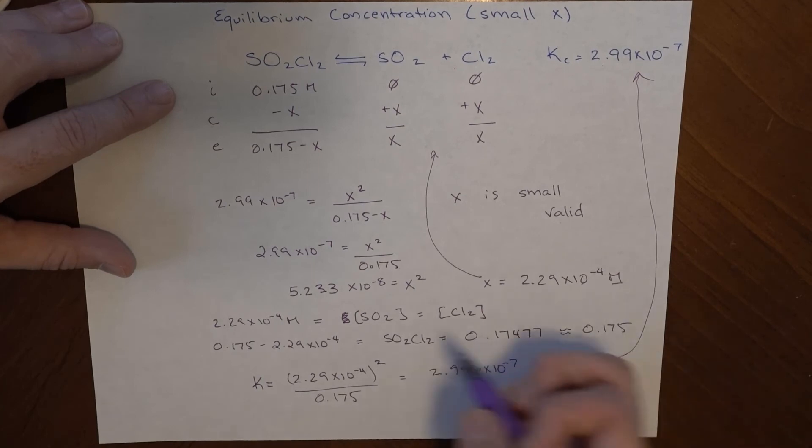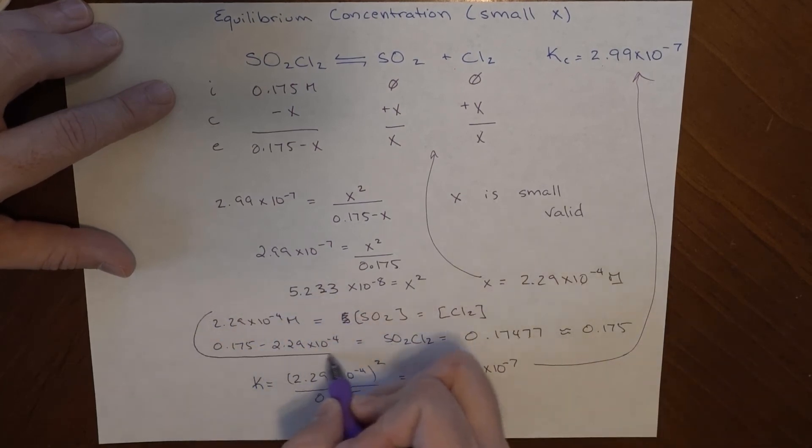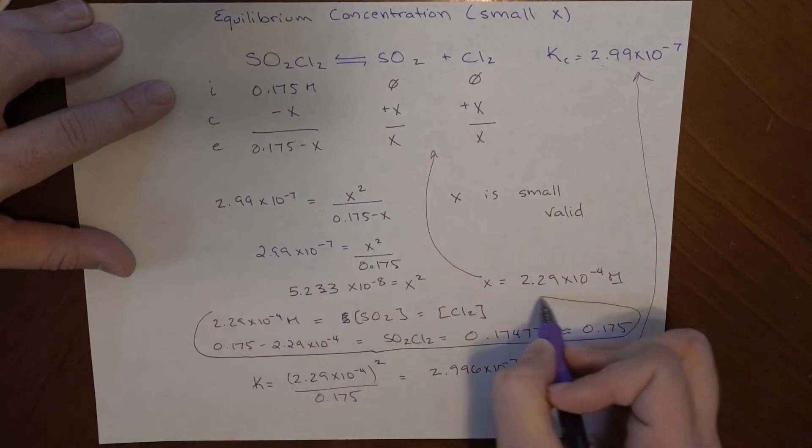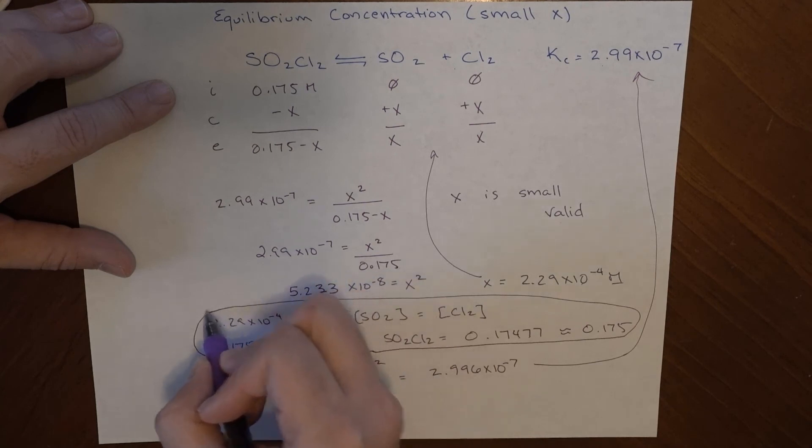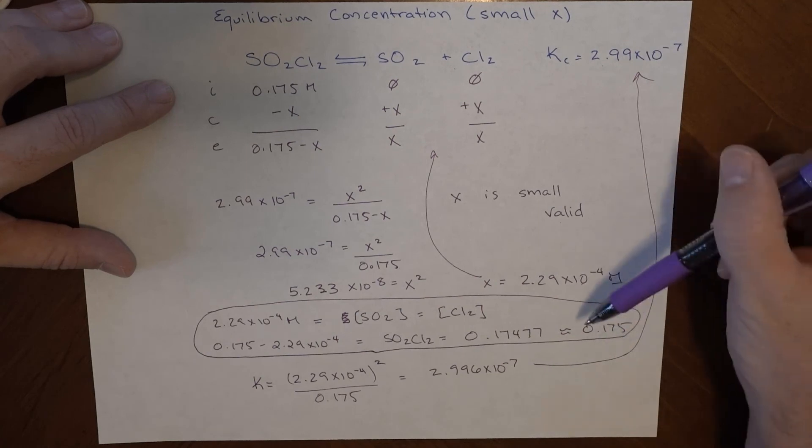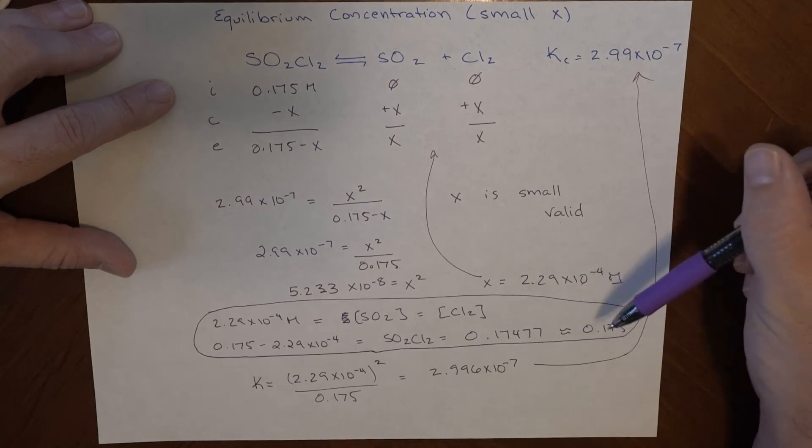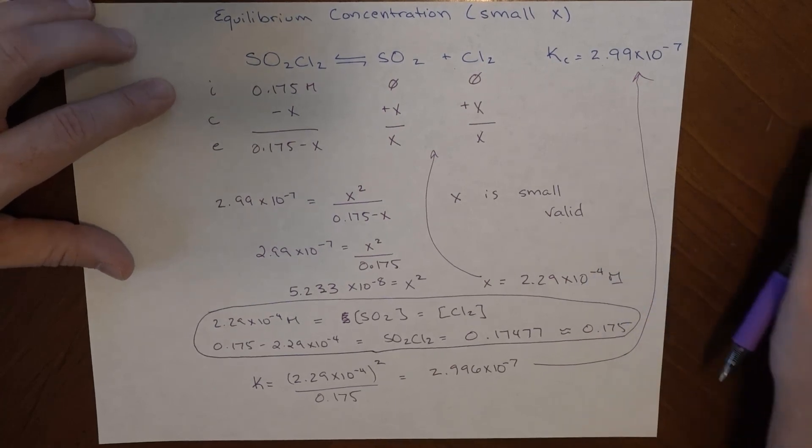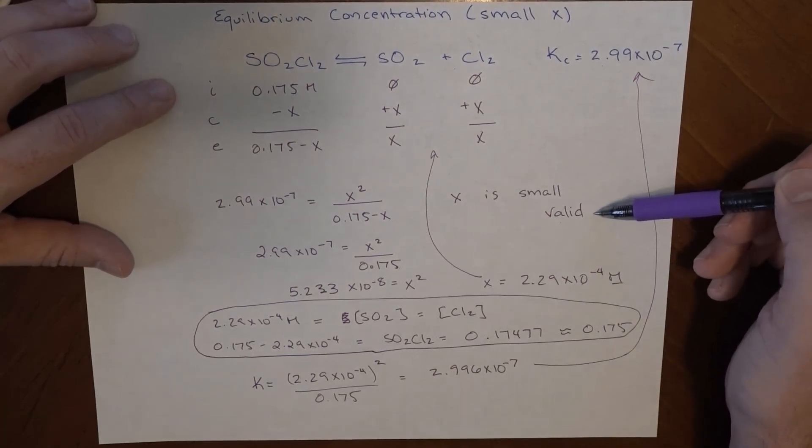I think everything sort of worked out. So this is the result that I'm looking for. The small x approximation, what it does is it allows us to sort of reason through and simplify our math based on a small assumption. Many, many times this will save you a lot of work. But you can only use it if it's a valid assumption.